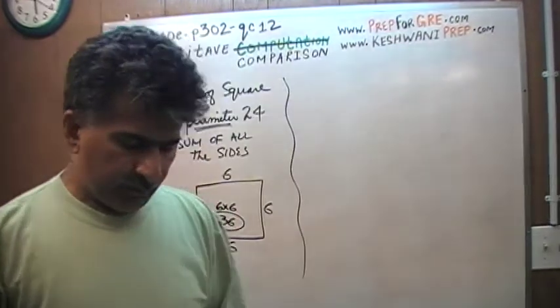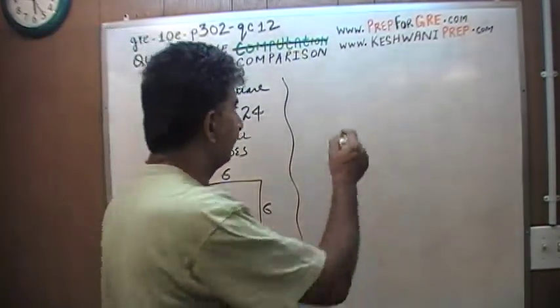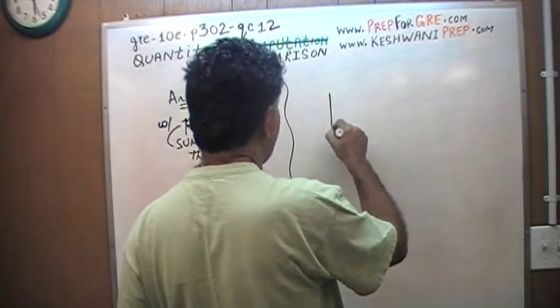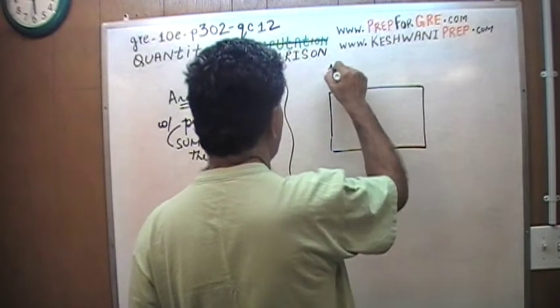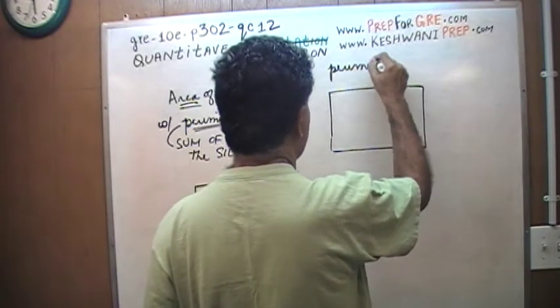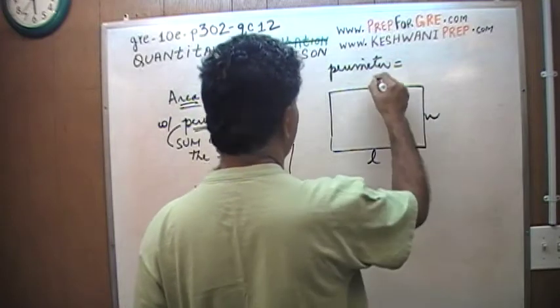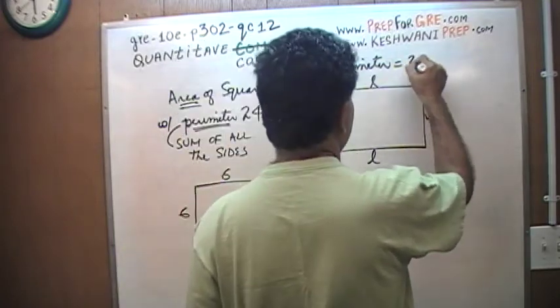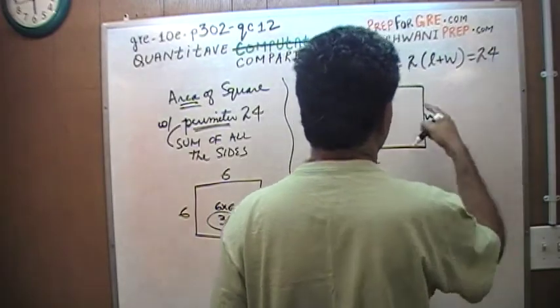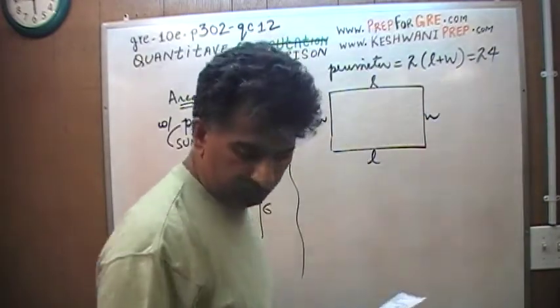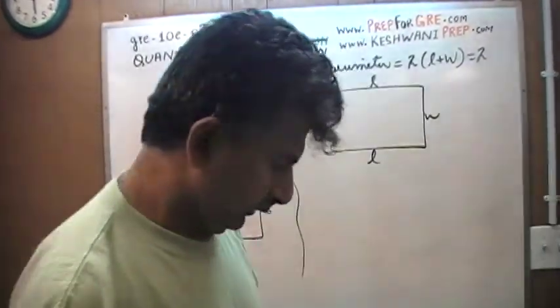The area of a rectangular region with a perimeter of 28. So we're dealing with a rectangle. The perimeter of this guy, which is length plus width plus length plus width, in other words 2 times length plus width, is 28.